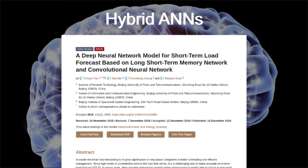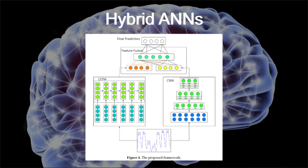In this experiment, they created a framework combining a long short-term memory network on the left with a convolutional neural network on the right. Interestingly, they found that their model was significantly more accurate than a traditional neural network, and even performed a little bit better than the Google DeepMind project for this specific application. Even a slight percentage boost in accuracy of a load prediction system can save millions of dollars from a company's operating costs.